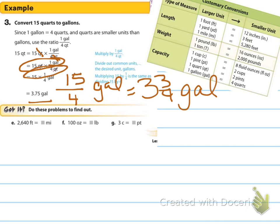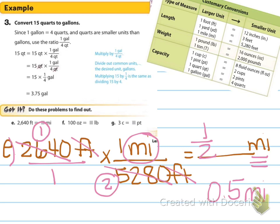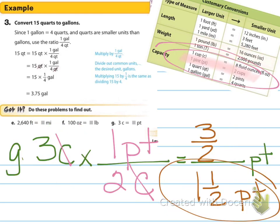Now you're going to do examples E, F, and G on your own — pause the video. For E: put feet on the bottom and miles on top, cross-simplify out feet, then cross-simplify 2,640 and 5,280 to get 1/2 mile or 0.5 miles. The answer for F is 25/4 of a pound, or 6 and 1/4 pounds. For G: put 1 pint on top and 2 cups on the bottom, cross-simplify cups, and we end up with 3/2 or 1 and 1/2 pints equal to 3 cups.